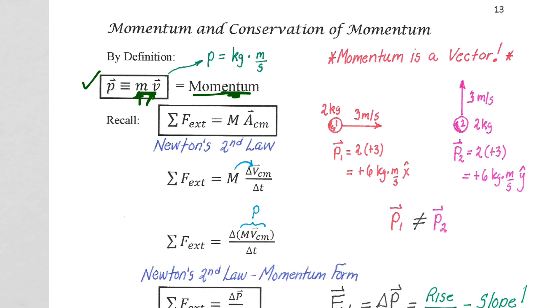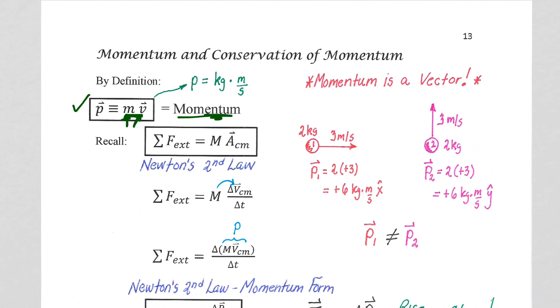Now, momentum units are based fundamentally on mass, kilograms, and velocity, meters per second. And there is no shortened unit. So momentum has units of kilograms meters per second.